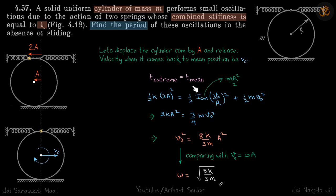Now energy at extreme is equal to energy at mean. Energy at extreme is only potential energy which is half K into 2A square, because the center of mass moves by A, the top point moves by 2A.